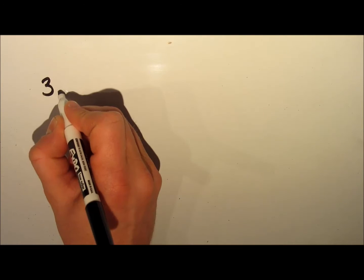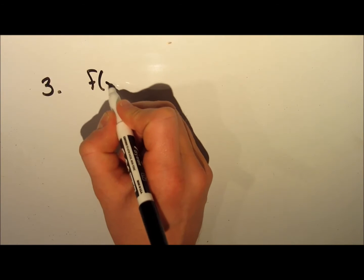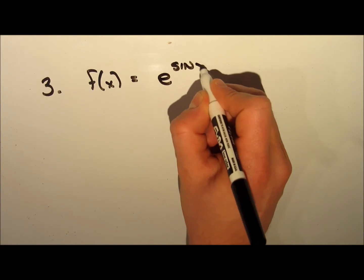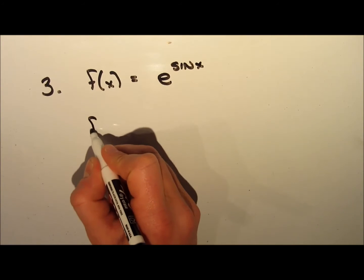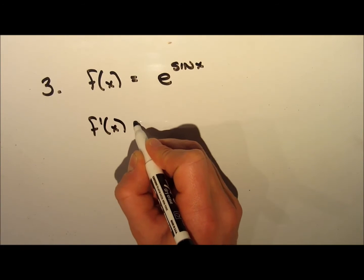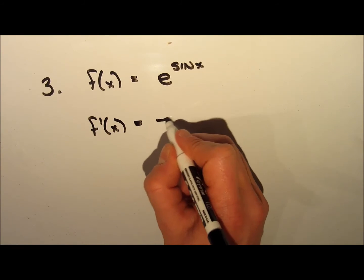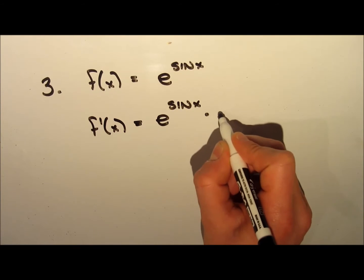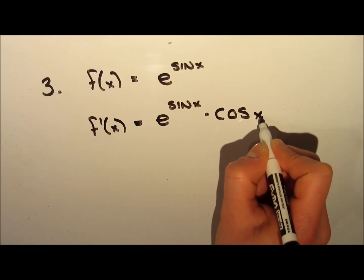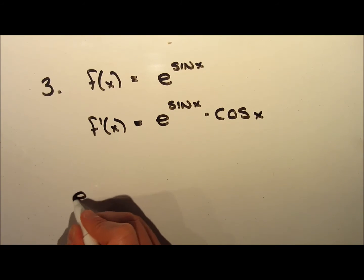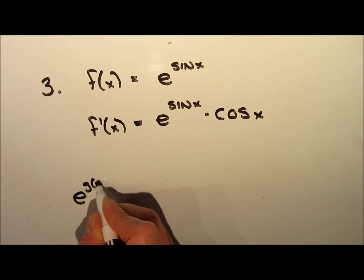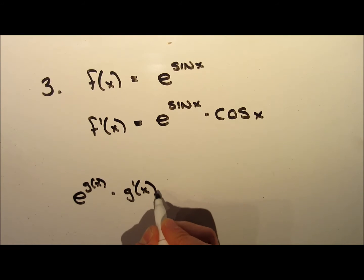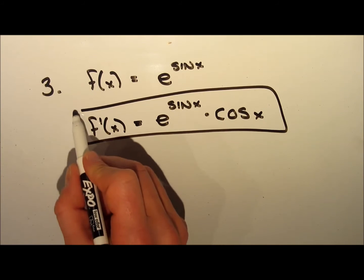This next example follows that third rule. The function is f(x) = e^(sin x). The derivative, f′(x), is e^(sin x) multiplied by the derivative of sin(x), which is cos(x). This makes sense because the derivative of e^g(x), where g(x) is some function — in this case sin(x) — is e^g(x) multiplied by g′(x).